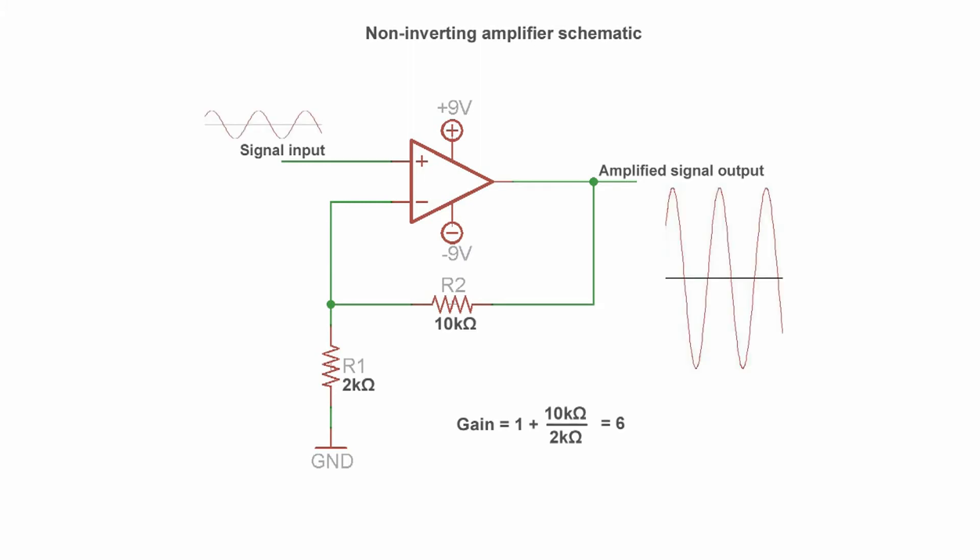So if R1 is 2 kiloohms and R2 is 10 kiloohms, you get a gain of 1 plus 5, which would be 6. You usually want these resistors to be somewhere in the kiloohm range, so an easy thing beginners can do is just let R1 be 1 kiloohm and use this equation to calculate the value of R2 to get the gain that you want.